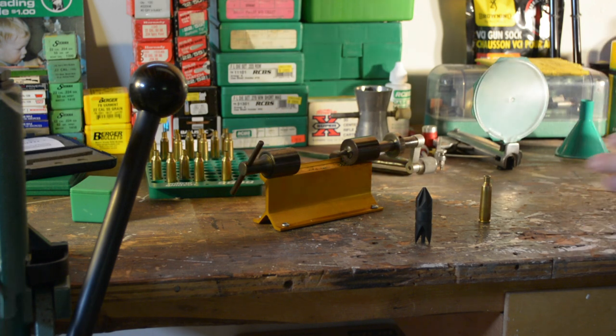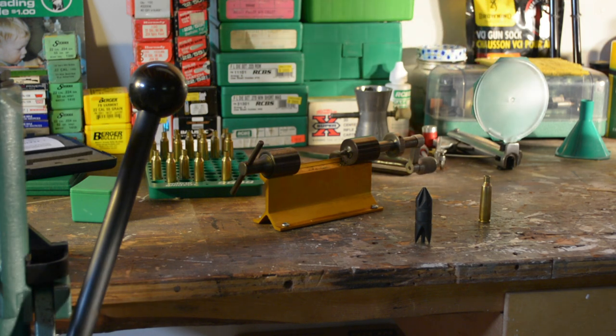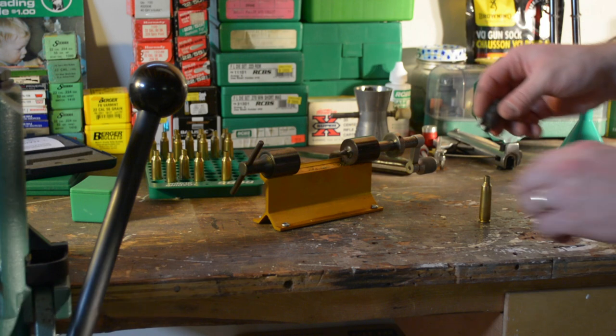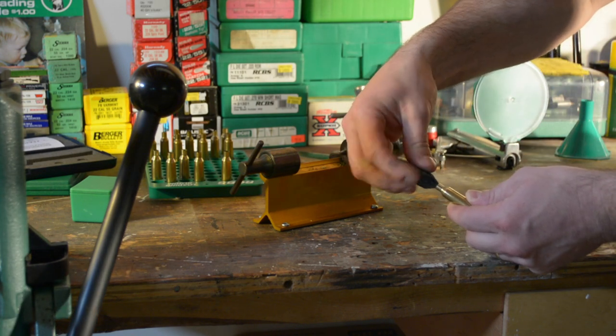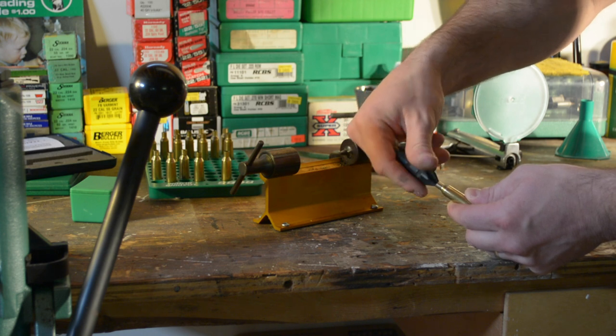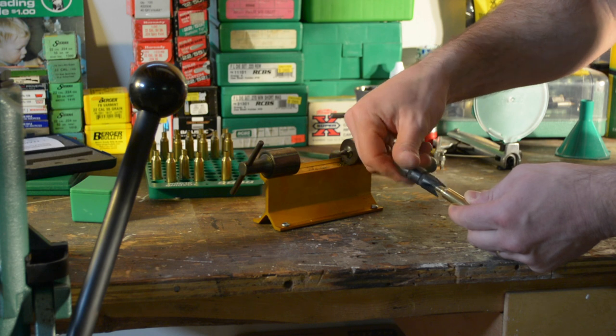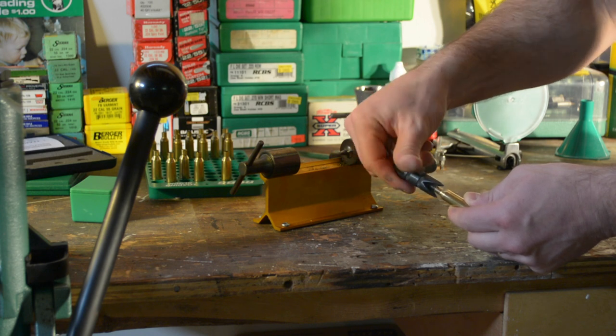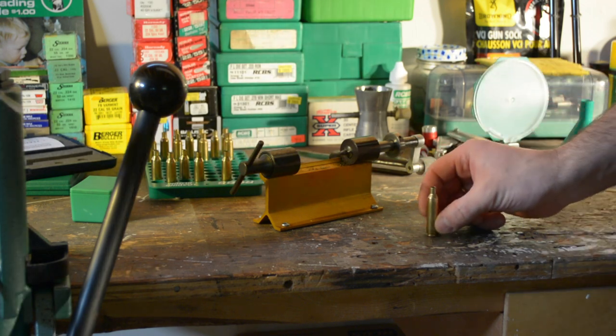You can get other pieces that fit on a handle. This is the one I use because I can do one end and then switch around and do the other. How that works is you just fit this into the case. You just want to do it enough to take off the burr on the inside, and then this one takes the burr off on the outside. You do that to each and every case.